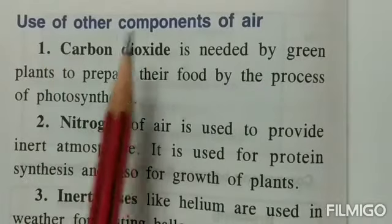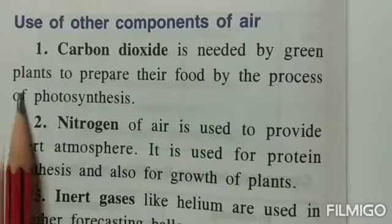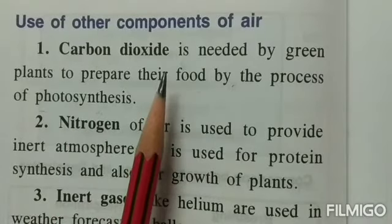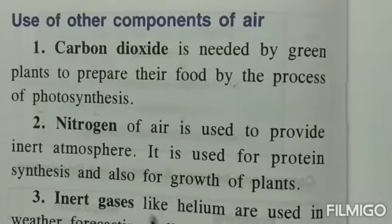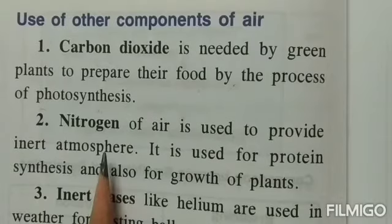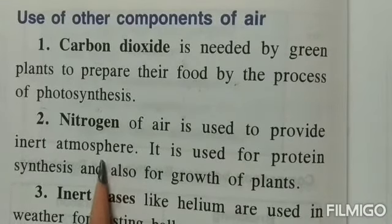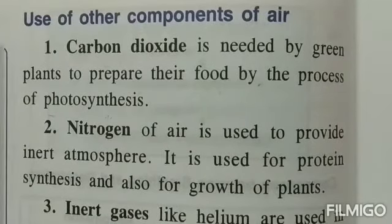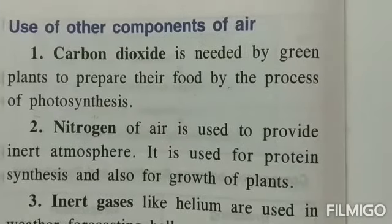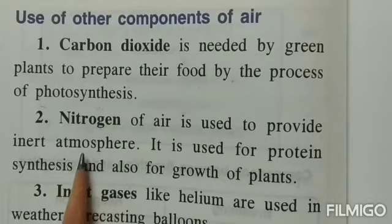Now the use of other components of air: Carbon dioxide is needed by green plants to prepare food by the process of photosynthesis — it is removed from the environment and oxygen is given back. Nitrogen provides an inert atmosphere. Nitrogen makes up approximately 78% of air and oxygen only 21%. Because oxygen strongly supports combustion, if nitrogen were not present, things that catch fire would keep burning. When the oxygen of the air is used up, nitrogen takes over and, since it does not support burning, things stop burning. Nitrogen is also used for protein synthesis and the growth of plants.